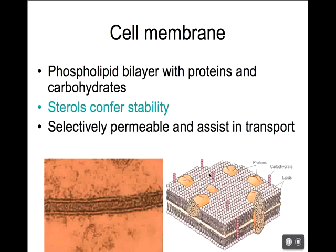Sterols are not found in bacteria — with one exception. Looking back at prokaryotic notes, the exception is the genus Mycoplasma. Mycoplasma is the only bacterial genus that does not have peptidoglycan, so it lacks the strength and support of a cell wall. Instead, it has sterols in its membrane. Mycoplasma is the one bacterial genus that does have sterols.